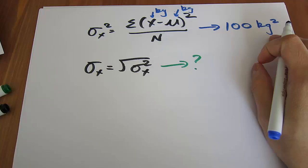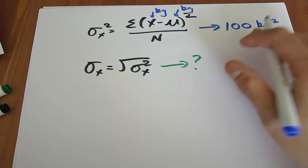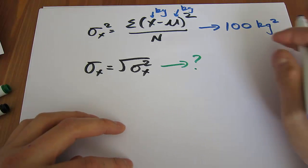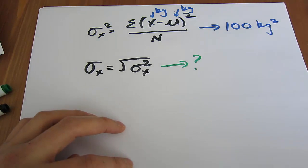Now, what is kilograms squared? If I told you that the spread in this class is 100 kilograms squared, you'd be like, what's that unit all about? I'm not familiar with it. So to get back to something that we're familiar with, what we do is we take the square root.